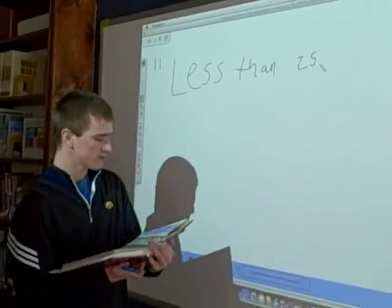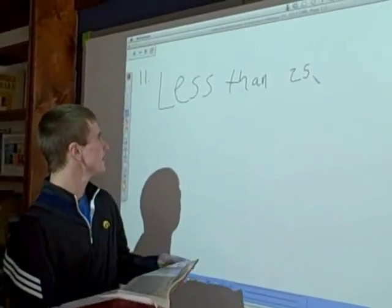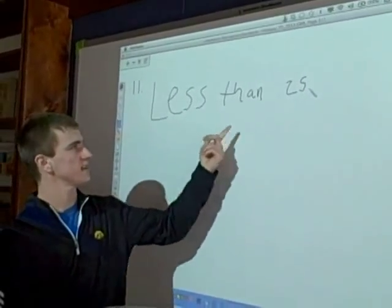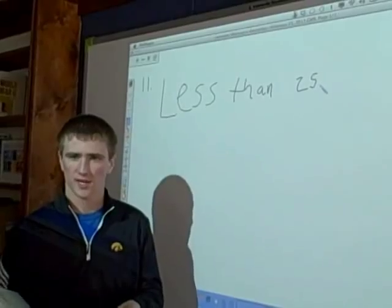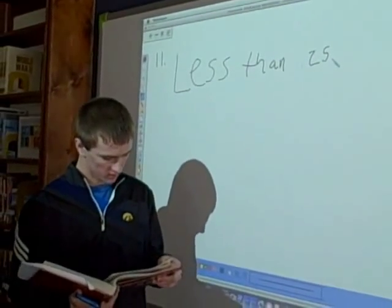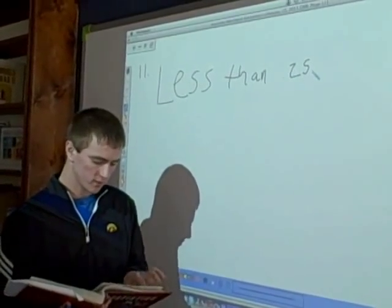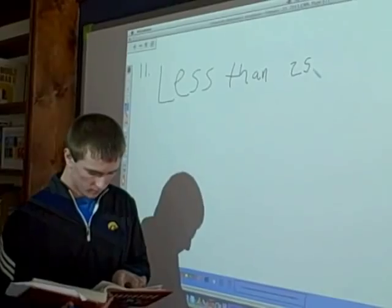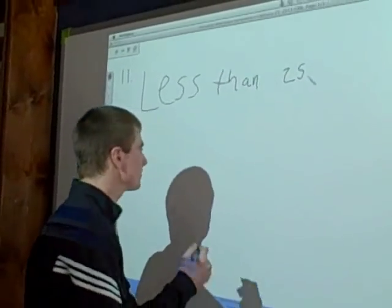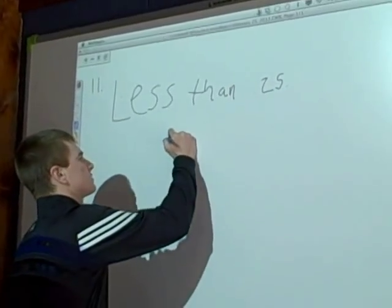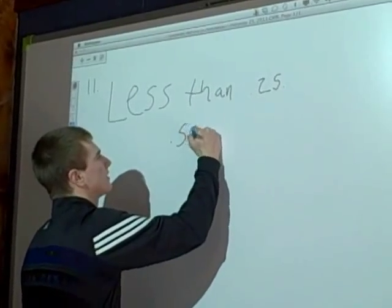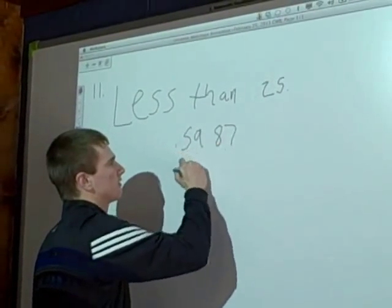For number 11, all you have to do is find the area that's less than 0.25. So all you have to do is go to your z-score chart and find 0.2 and go over to 0.25. And the answer you get is 0.5987.